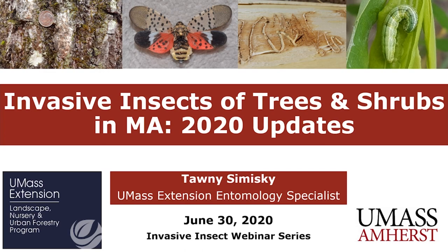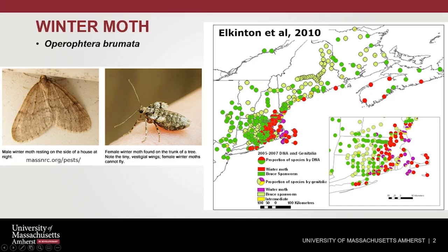Let's get started. Today I will be speaking about invasive insects of trees and shrubs in Massachusetts and providing the 2020 updates that I have thus far. A great place to begin is with winter moth. The winter moth was first noticed as a problem defoliating trees and shrubs in the late 1990s in eastern Massachusetts, and it wasn't until 2003 when the winter moth was officially identified.